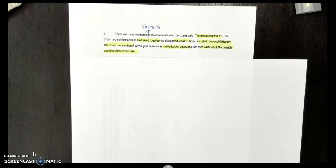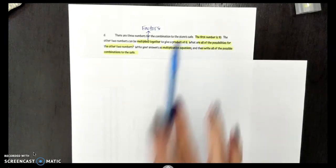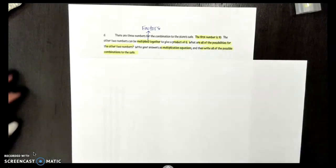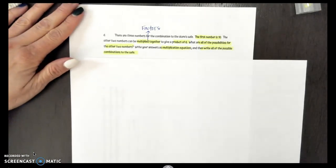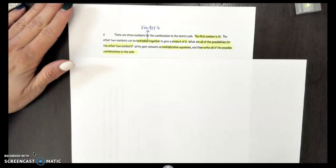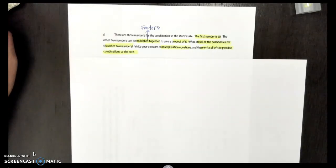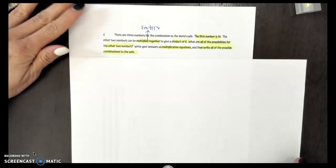Write your answers as multiplication equations. And then write all of the possible combinations to the safe. So I have 2 things I need to do. I need to write the multiplication equations that are going to give me a product of 6. And I have to write all of the possible combinations to the safe. So I'm thinking of all of the factors of 6. And I know that 6 is a composite number. So I'm going to have definitely more than 2. In fact, my factors for 6 are 1, 2, 3, and 6.